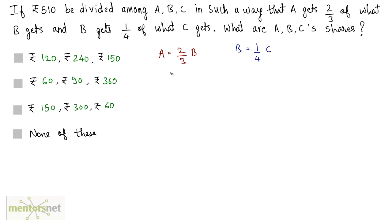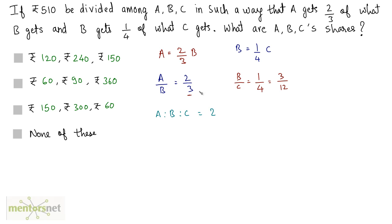I can get the ratios from this. The ratio of A to B is 2 is to 3, and the ratio of B to C is 1 is to 4. I can rewrite B to C by multiplying numerator and denominator by 3 to get 3 by 12, so B's values are common. Therefore A is to B is to C equals 2 is to 3 is to 12, and the total number of parts is 12 plus 3 plus 2, which is 17.